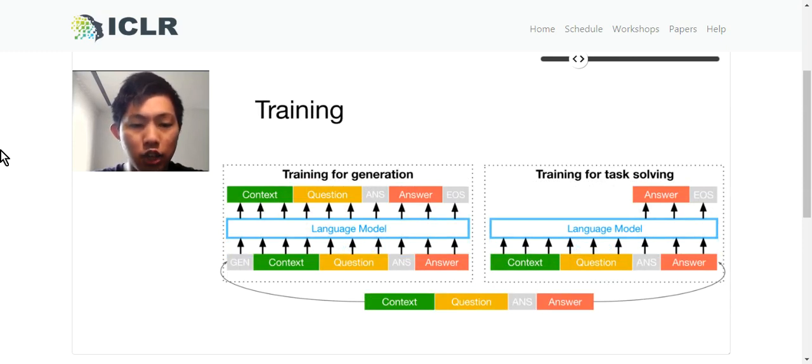To achieve that, in training, we feed the context-question-answer sequence into the model in two ways: training for generation and training for task-solving. For generation, our model should output the whole context-question-answer sequence and the loss is calculated on the whole sequence. In task-solving, our model should only output answer and the loss is only calculated on the answer.